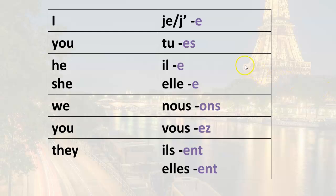Just a reminder — these are the endings for regular ER verbs in the present tense. The endings that you have to have memorized; there's no way around it. All you have to do is associate each ending with the subject pronoun that you see. So for example, je — the ending for regular ER verbs in the present tense is always -e. For tu, it's always -es, and so forth and so on. You have to have this memorized; there's no way around it.